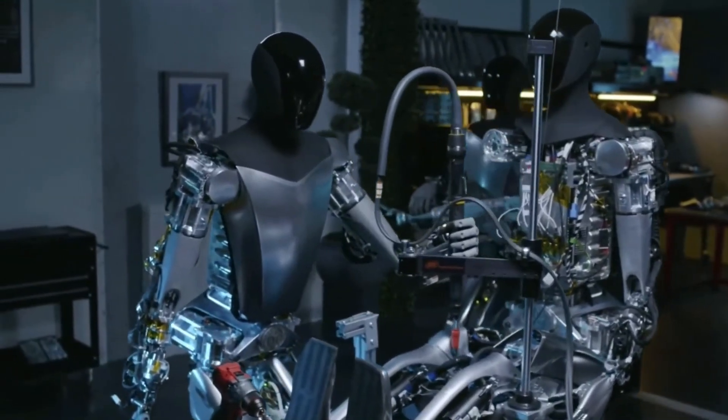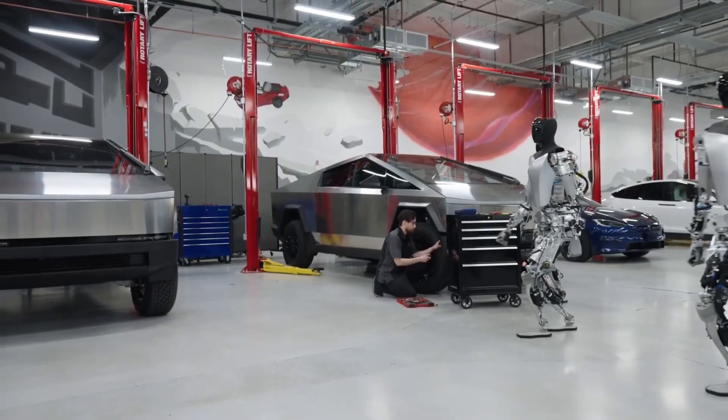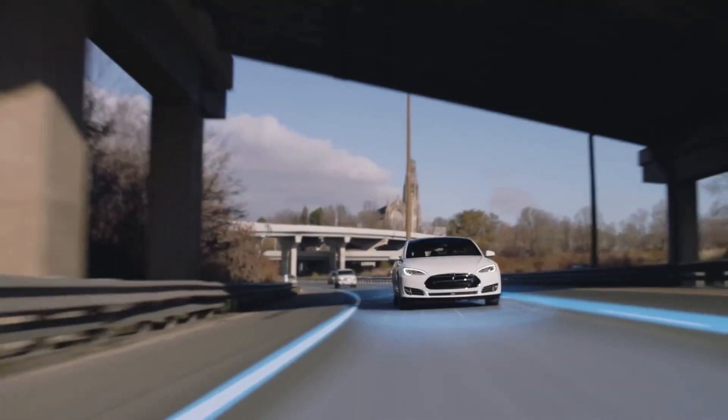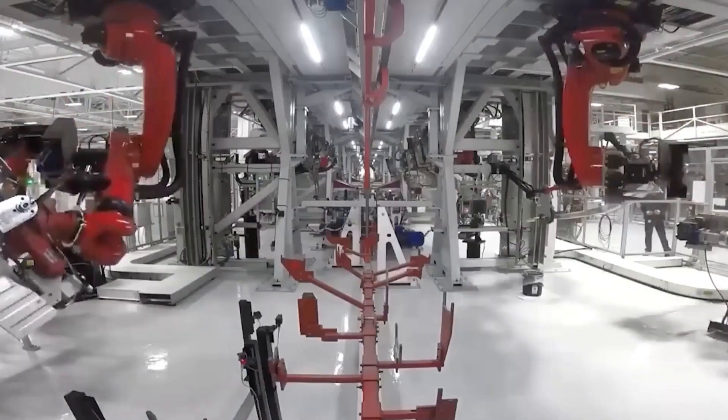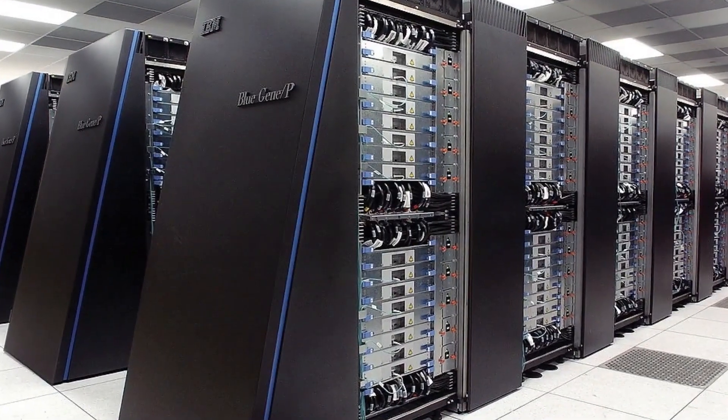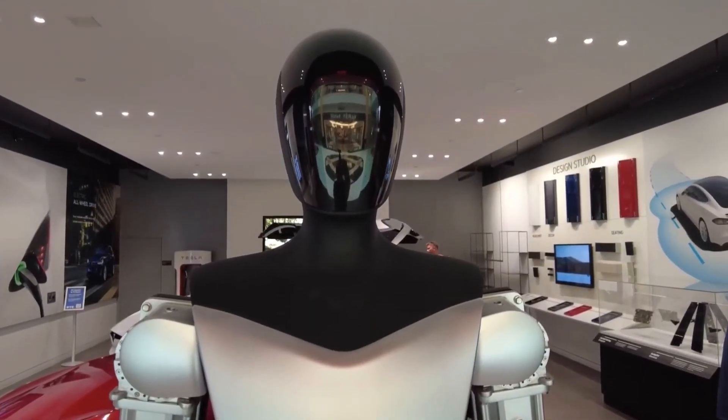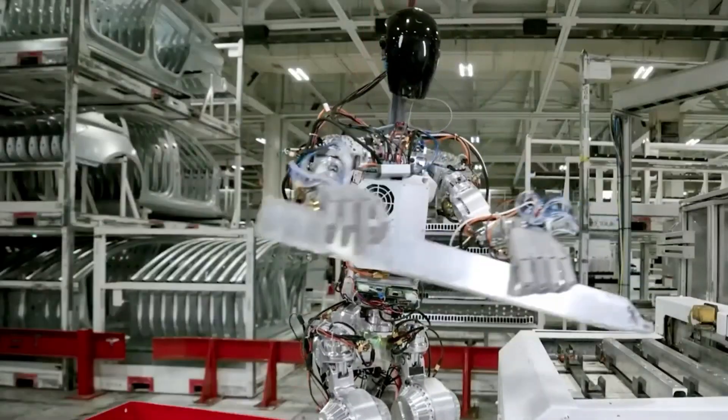Tesla is using its end-to-end neural nets to train Optimus to perform various tasks and scenarios that can assist humans in various industries and aspects of human life. Tesla is also using its fleet learning system to collect data from millions of Tesla vehicles on the road, as well as from other sources, such as cameras and sensors in factories and warehouses. Tesla is also using its Dojo system to train large-scale neural nets for Optimus and other applications. Tesla is aiming to create a general-purpose robotic humanoid that can do anything that humans do not want to do.